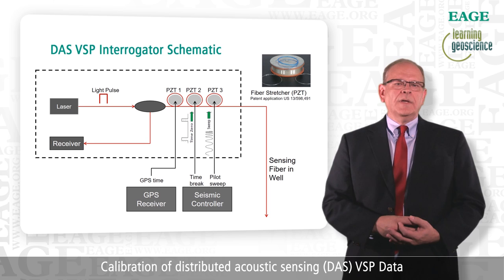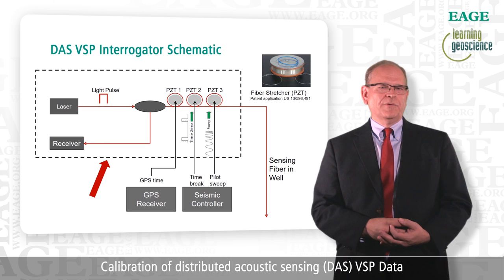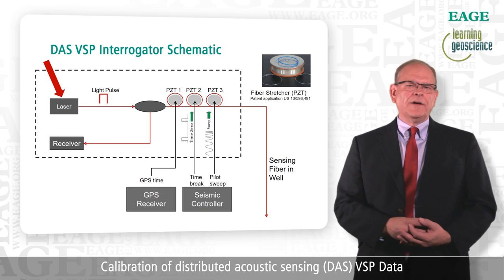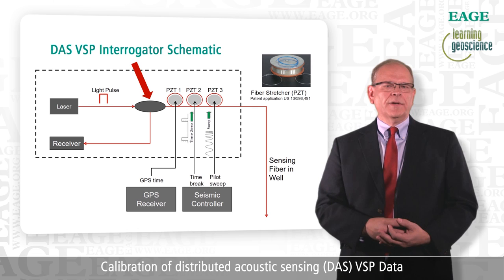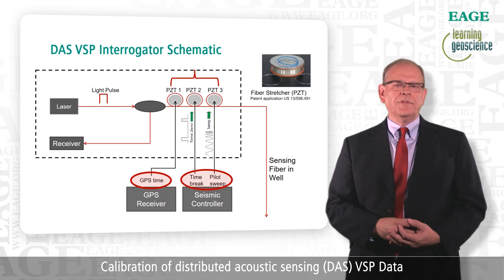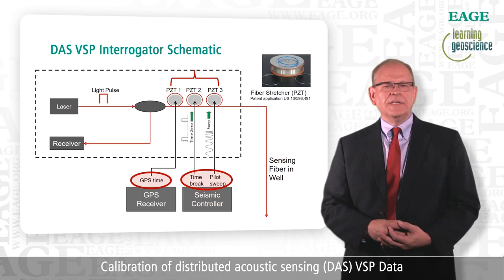This is a simplified schematic of a DAS VSP interrogator system. The dotted black box in the schematic outlines the DAS interrogator unit. The red line represents the fiber optic cable which reaches from the interrogator unit to the bottom of the well. The laser fires a pulse of light into the fiber. The light passes through a circulator, which can be thought of as a switch. Before the light leaves the box, it encounters three fiber stretchers. These fiber stretchers allow us to encode the GPS timestamp, the zero time break signal, and the pilot sweep all directly into the recorded DAS VSP data. This makes it easy to keep track of the acquisition details.